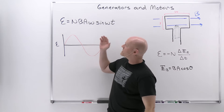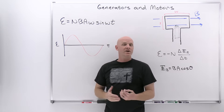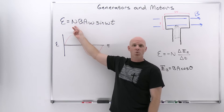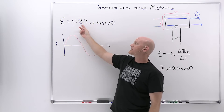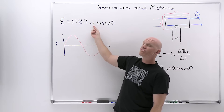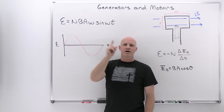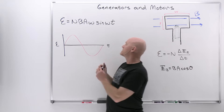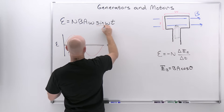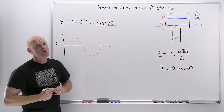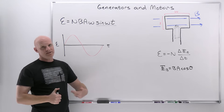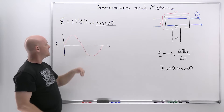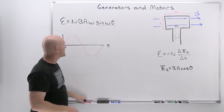We want to derive an expression for the EMF generated by a generator, and this is that expression. It depends on the number of turns of wire in our coil, the strength of the magnetic field, the area of the coil, and then a frequency factor related to the frequency of rotation — something we saw back in rotational motion. And then also on the sine of omega t — again that frequency factor. The big thing is that it is sinusoidal in nature. This is not going to produce a constant EMF; it's going to be producing an oscillating EMF, oscillating according to a sine function, hitting a maximum and a minimum.